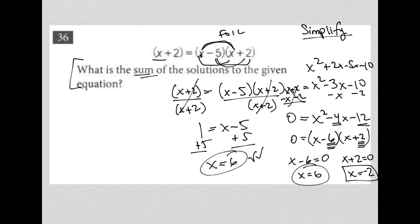So then the sum of the solutions would be 6 plus negative 2, or the same thing as 6 minus 2. Therefore, the answer to the sum of the solutions would be 4.